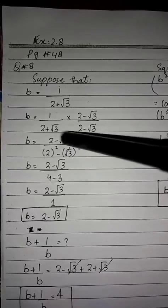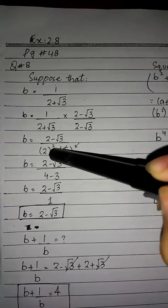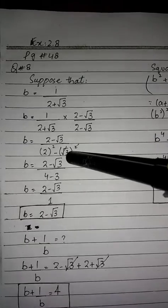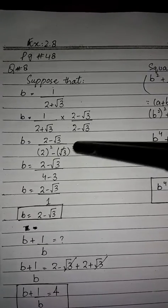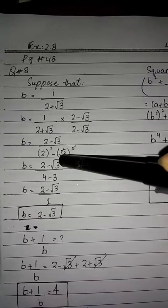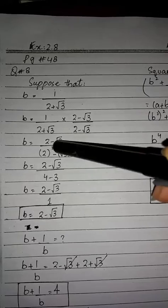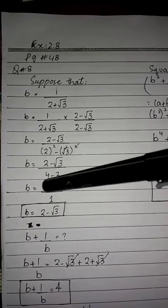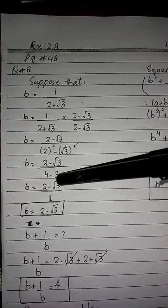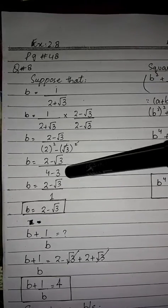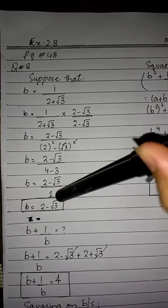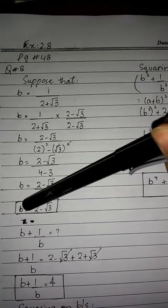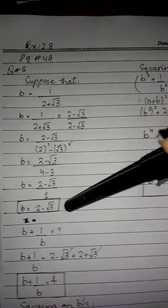So what is this? A is 2, so we have 2 squared. B is root 3, so we have root 3 squared. The root and square cancel each other. So the remaining result is 2 minus root 3.